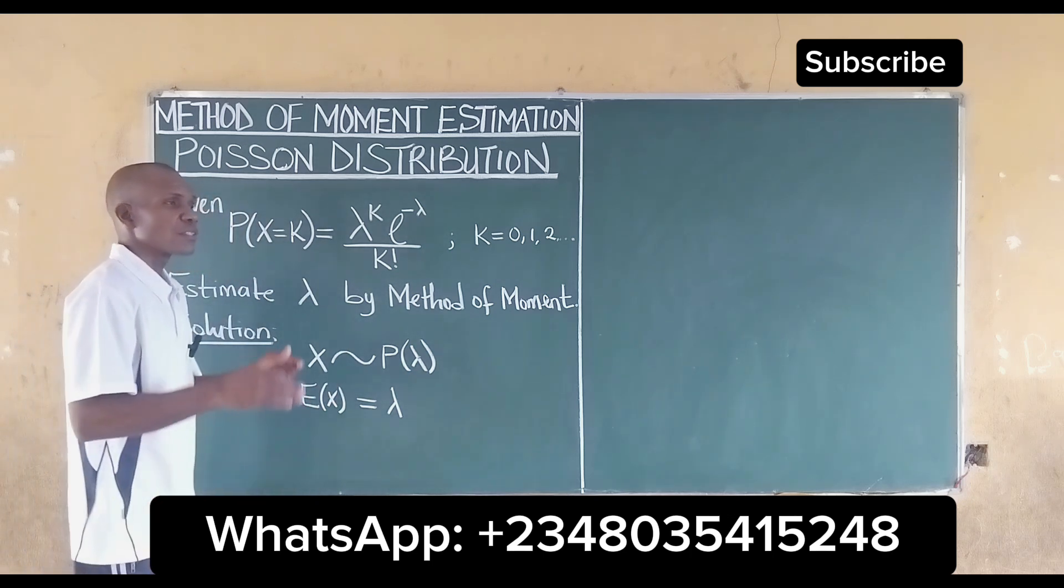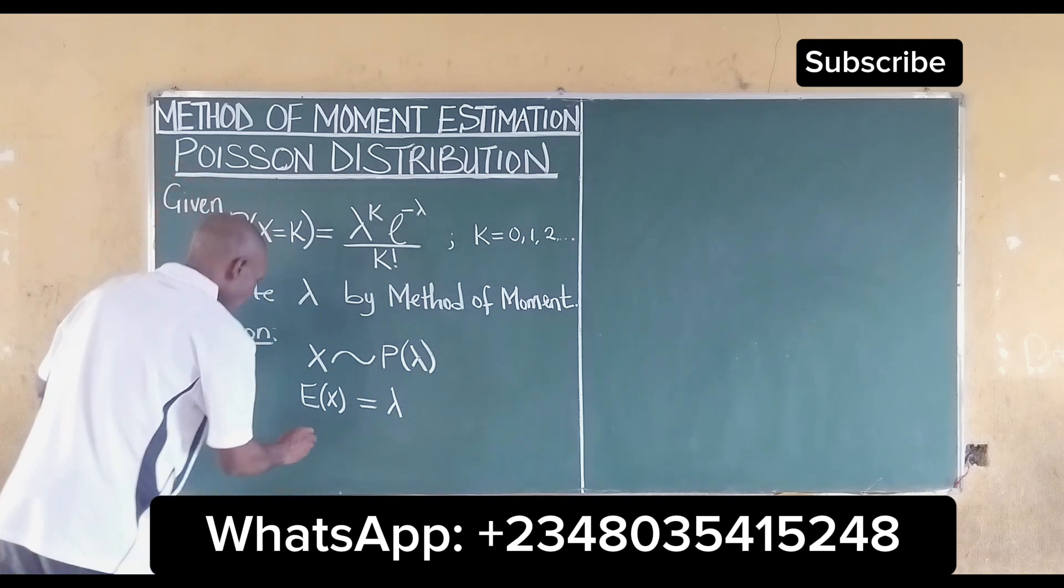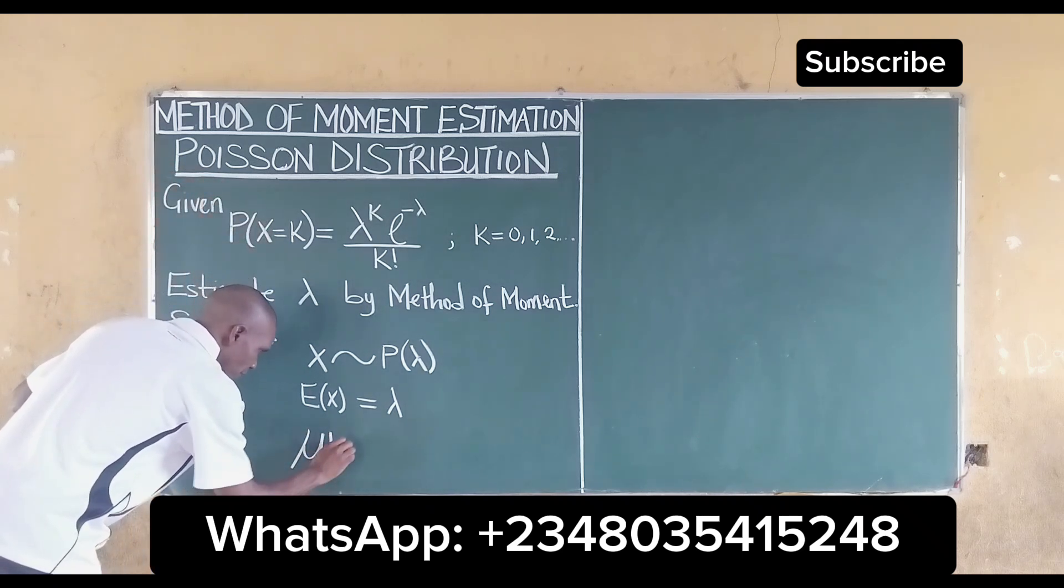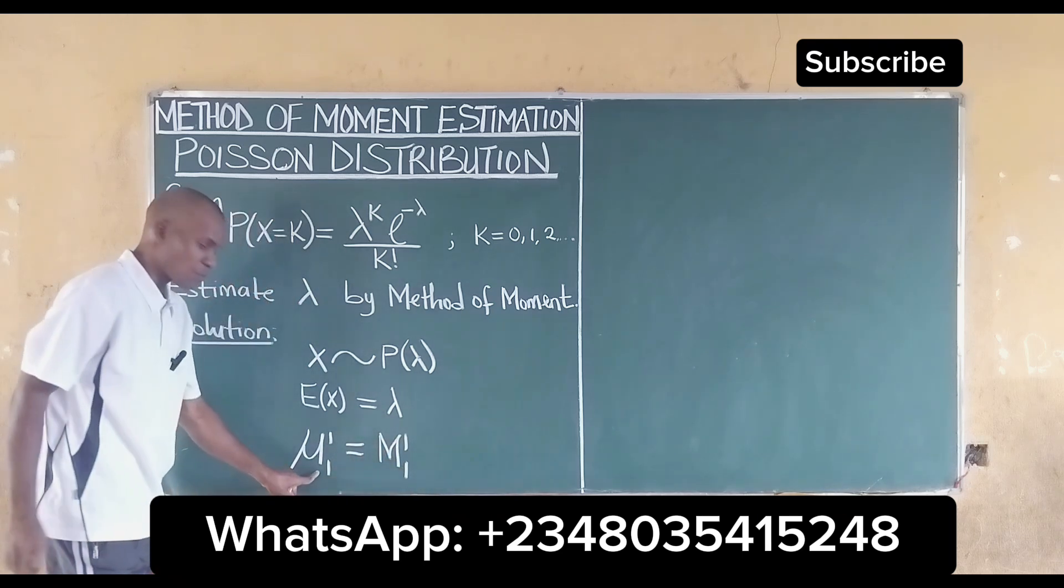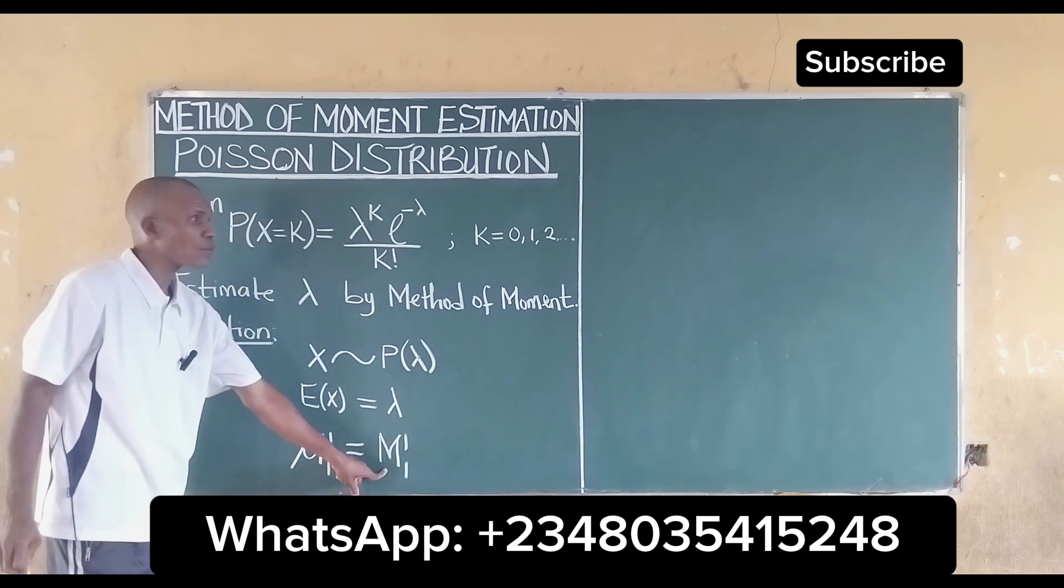For the method of moment, the solution is when the population mean is equal to the sample mean. This is the population mean, while this is the sample mean.